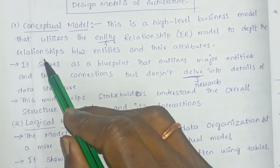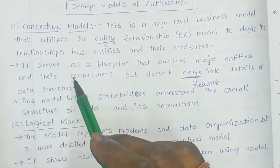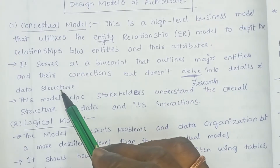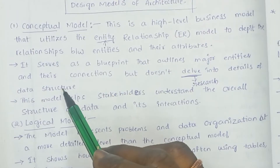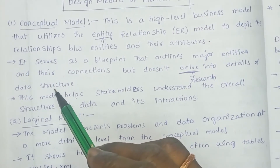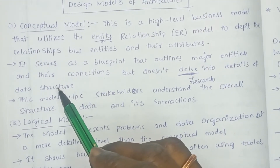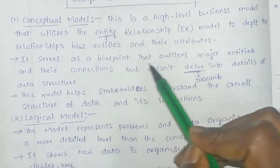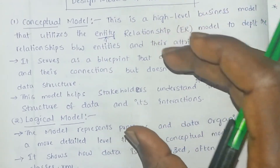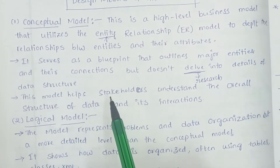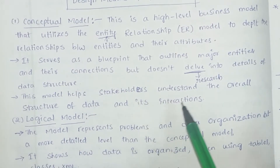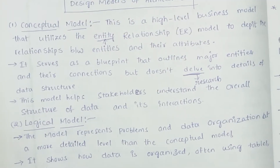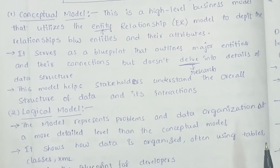The conceptual model describes the relationship between entities and their attributes. It serves as a blueprint that outlines major entities and their connections but does not go into the details of data structure. This model helps stakeholders understand the overall structure of data and its interactions — whatever interactions are present for stakeholders to understand.